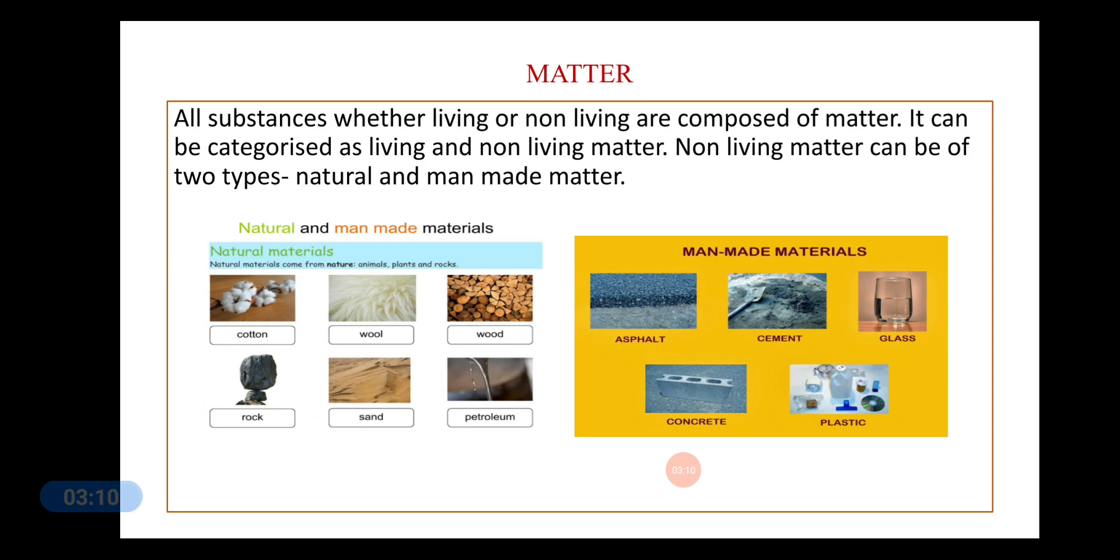Different substances are made up of different kinds of matter. Like, the chair is made up of wood. Or, the bucket is made up of plastic. The book is made up of paper. So, different materials are used to make different objects.